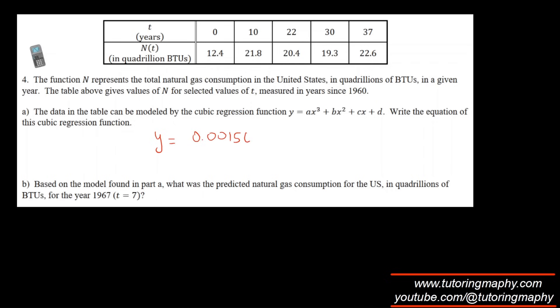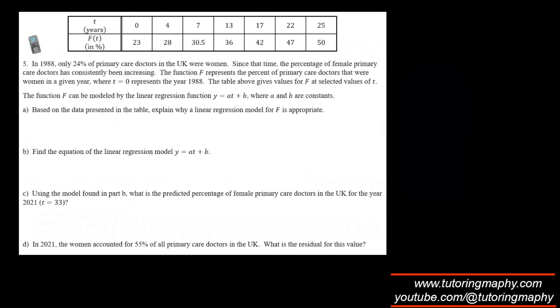We are getting the model as y equals 0.00156x cubed minus 0.0978x squared plus 1.7617x plus 12.4012. Based on the model, what is the predicted consumption at t equals 7? All we have to do is just replace x with 7. This number is coming as 20.476 quadrillions of BTU.